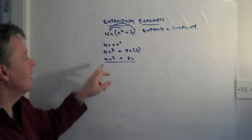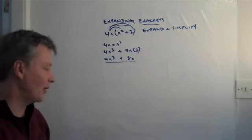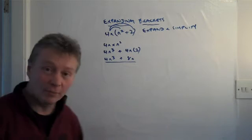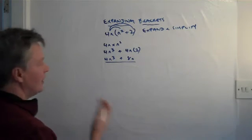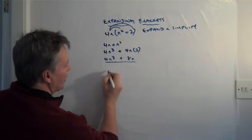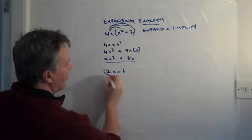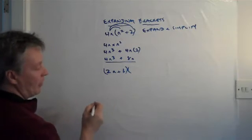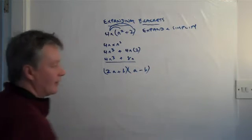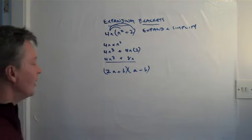And that is expanding and simplifying those brackets. The other type of question you're going to get is slightly different, where you're going to get something like this. And it'll say expand and multiply 2a plus b in brackets, a minus b in brackets.